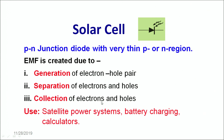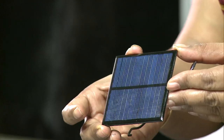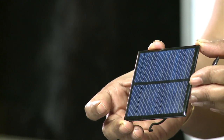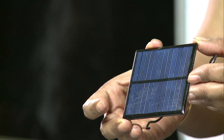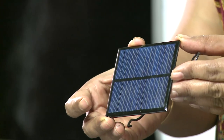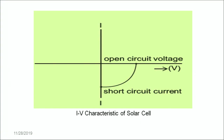A large number of electrons and holes are collected towards the n-side and p-side of the diode, generating an EMF. When this diode is connected in a circuit, a large amount of current begins to flow. These solar cells find applications in satellite power systems, battery charging, and calculators, among many others. This is a solar panel, which is a collection of a large number of solar cells. In this 2.5 by 2.5 chip, there are around 400 solar cells. The IV characteristics of a solar cell are shown in the fourth quadrant of the graph.